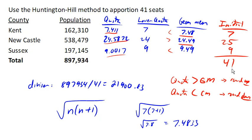This is an adjusted divisor method, so if the total did not come out correctly, we would adjust our divisor and do the whole process again. But in this case, we are done.